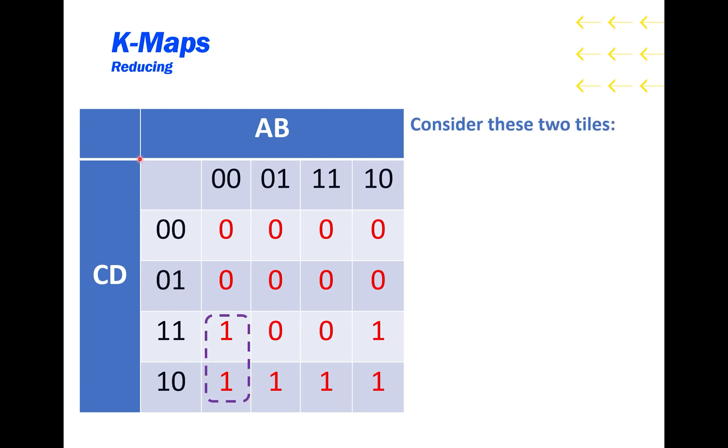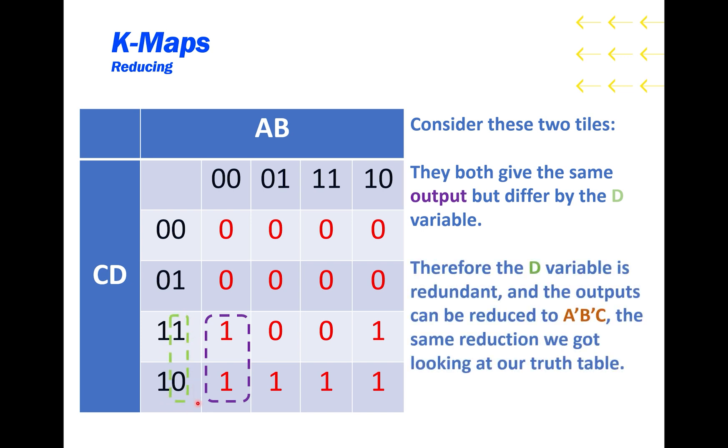Let's consider these two tiles. We can see that the first one is A'B'CD. And the second one is A'B'CD'. They both give the same output of 1, but differ by the D variable. Therefore, the D variable is redundant, and the outputs can be reduced to A'B'C. The same reduction we got looking at our truth table.